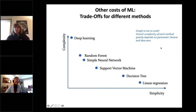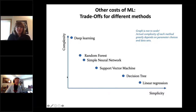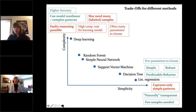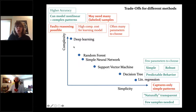Some other costs of machine learning: here's a graph showing trade-offs between different methods. This is not to scale, but the x-axis has simplicity and the y-axis has complexity. Different machine learning tools fall along this curve. Linear regression is the simplest. Decision trees are next, then support vector machines, then simple neural networks and random forests — you can argue the order. Then you go more complex to reach deep learning.